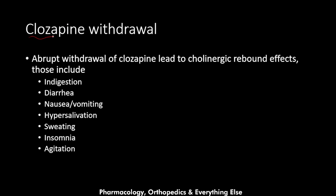Now let's talk about clozapine withdrawal. Abrupt withdrawal leads to cholinergic rebound effects. Because this medication has an anticholinergic effect by blocking muscarinic receptors, those receptors upregulate during treatment. When the medication is stopped suddenly, these now-unoccupied receptors produce cholinergic rebound effects including indigestion, diarrhea, nausea and vomiting, hypersalivation, sweating, insomnia, and agitation.